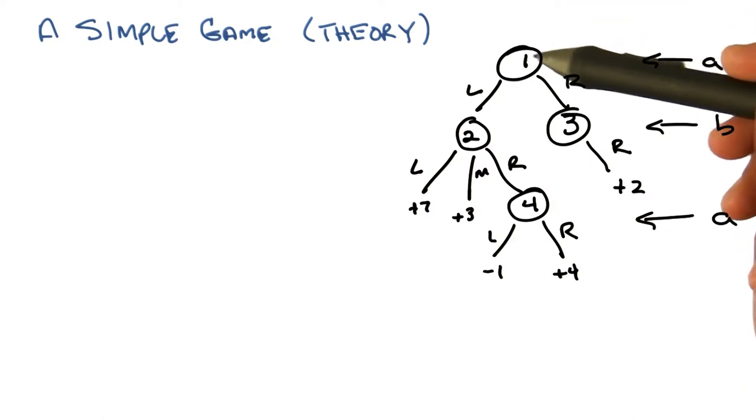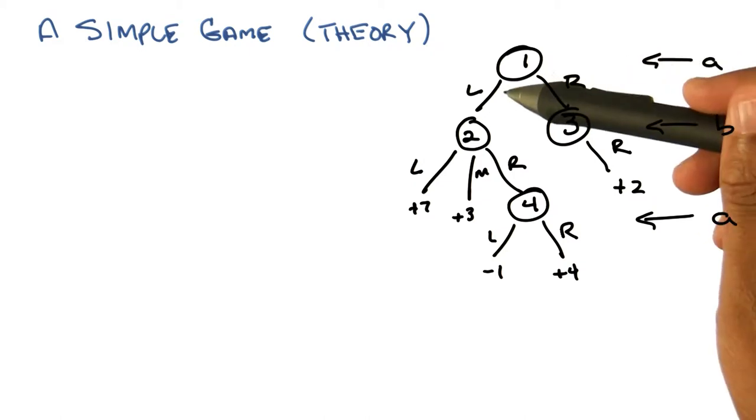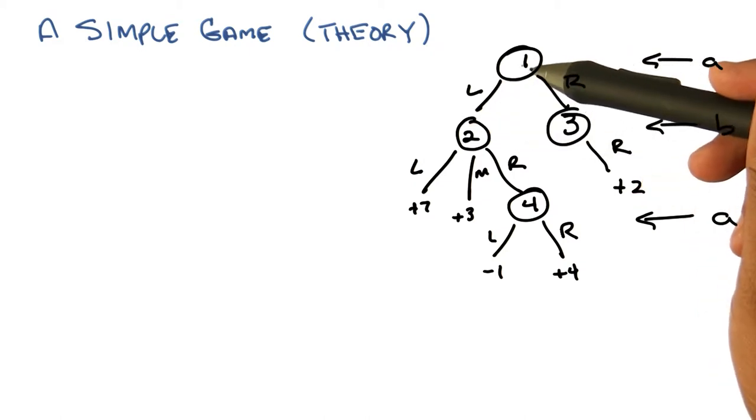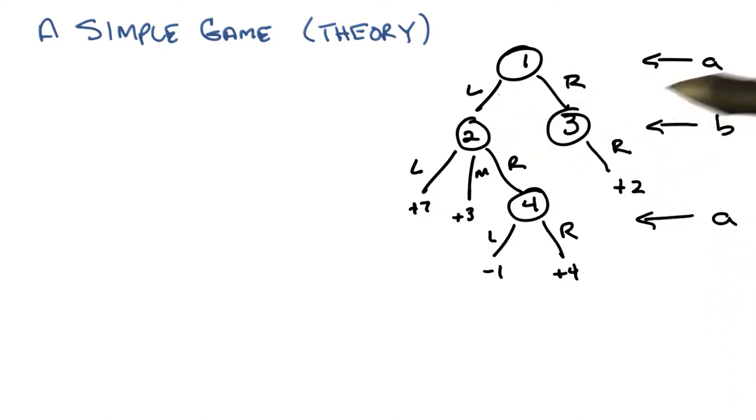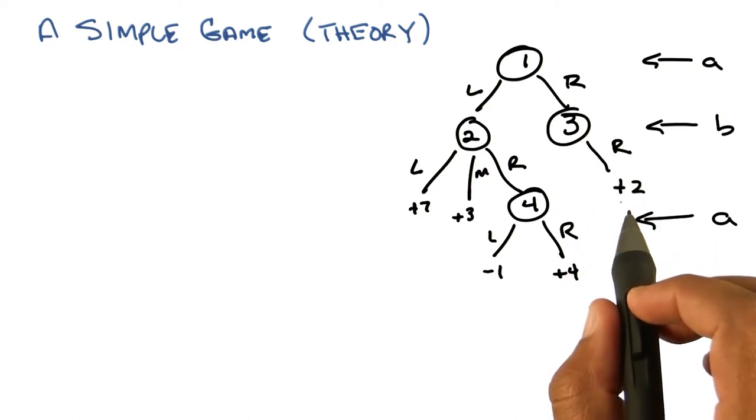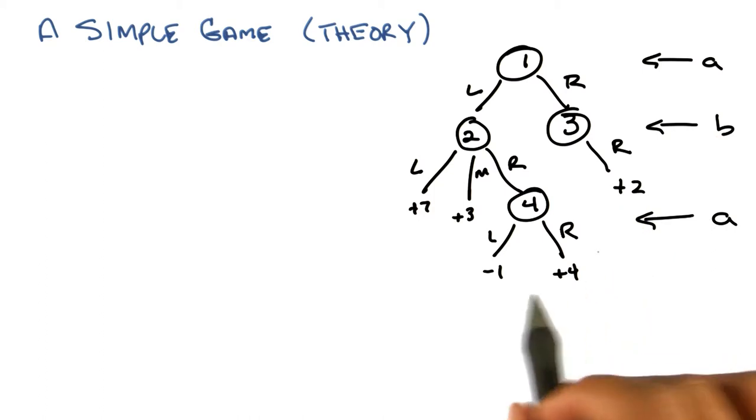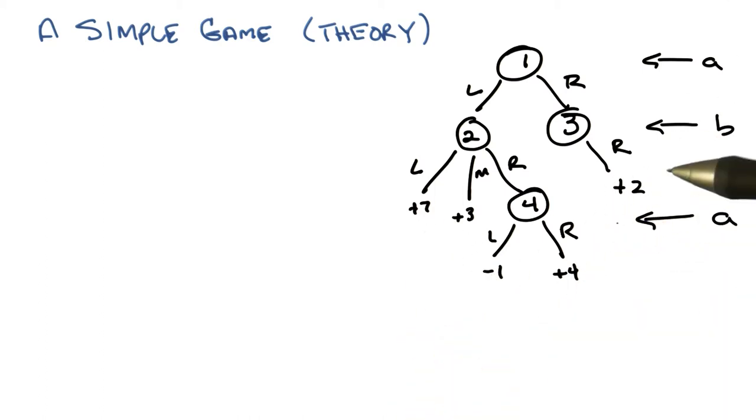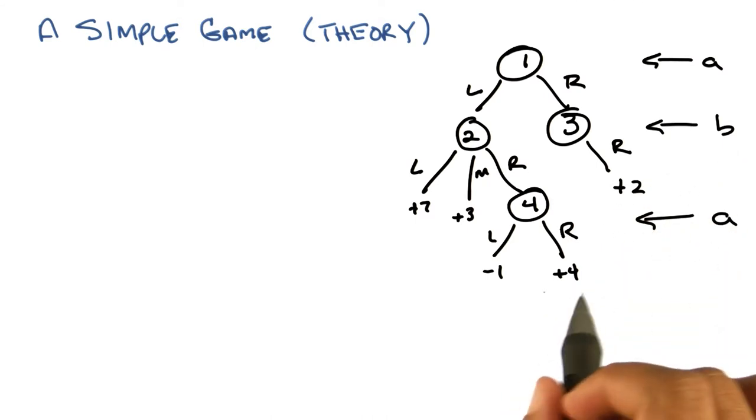So in particular, if you look at the details of this game, you start out in state one. And A gets to make a choice between two actions, going left or going right. If A goes right, she ends up in state three. If she goes left, she ends up in state two. Regardless, B gets to make a choice. From state three, we can choose to go right, and really that's all that can happen. And what happens if B goes right from state three, is that a value of plus two is assigned to A. All of these numbers at the bottom, at the leaves here, are going to be values or rewards, if you want to think about them that way, that are assigned to player A. And in fact, for the purposes of this game, it's going to be the case that B always gets the opposite of what A gets. So if A gets plus two, then B gets minus two. If A gets plus four, B gets minus four. If A gets minus one, B gets plus one.